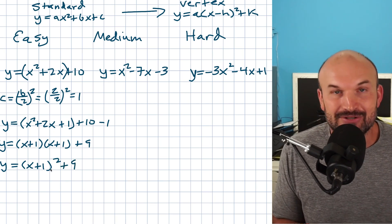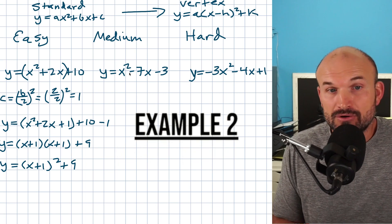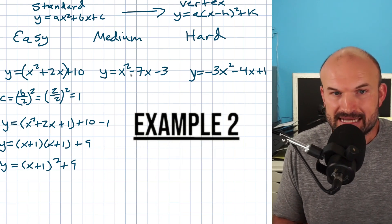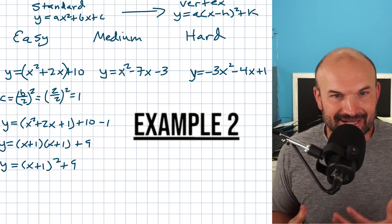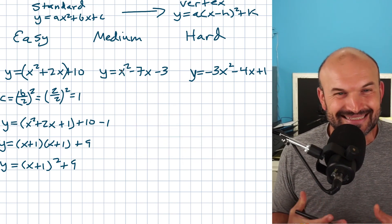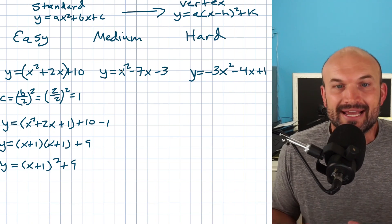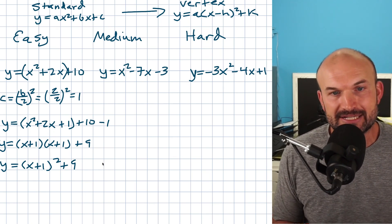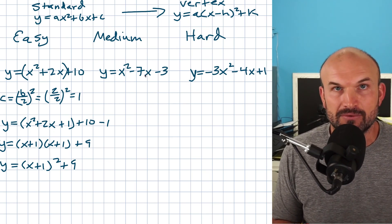So that's going to be x plus one quantity squared plus nine — and you can now see this is in vertex form. Now let's work on the next example. If you look ahead, you might realize this one looks a little more difficult — the reason being that your middle term is not divisible by two.